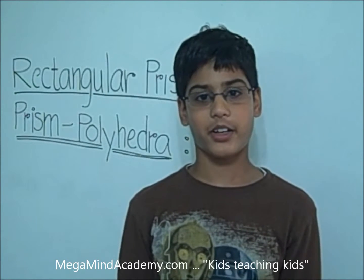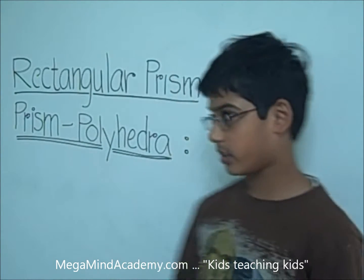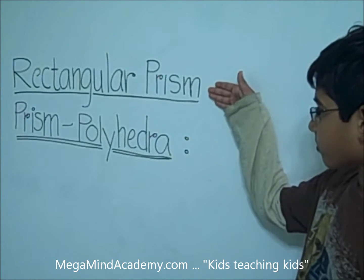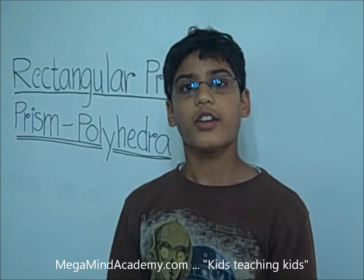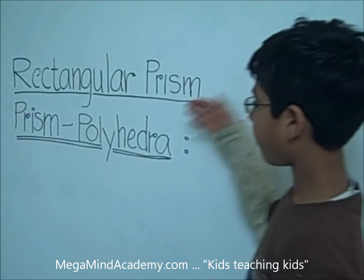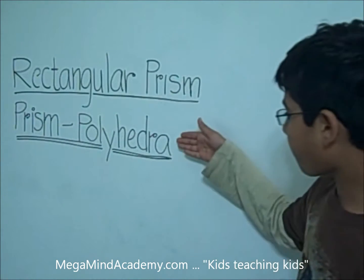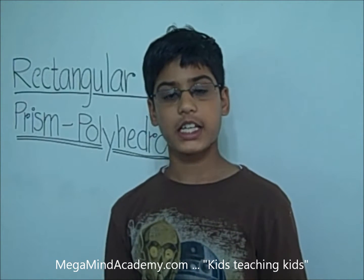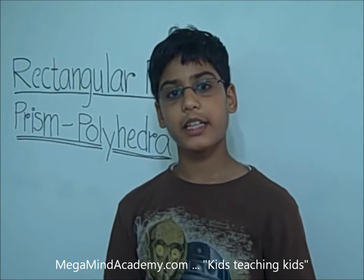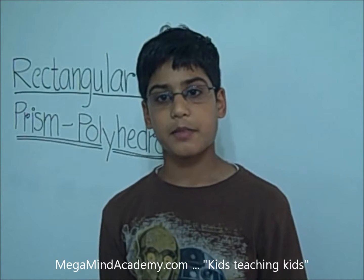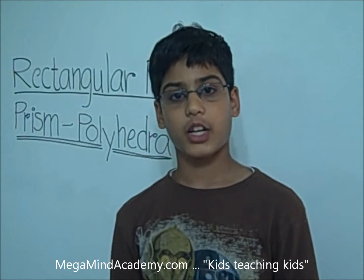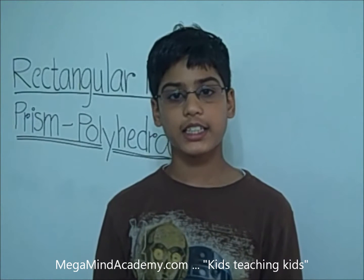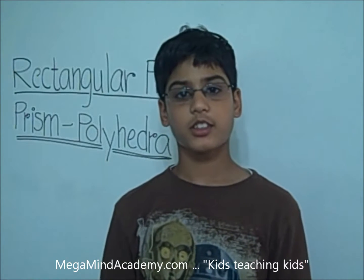Hi! Today we are going to learn about how to build a rectangular prism. A rectangular prism is a type of prism, which is a type of polyhedra. Before we learn about how to build a rectangular prism, there are some interesting facts about a rectangular prism that I want to share with you. A rectangular prism is a very unique and beautiful three-dimensional figure.